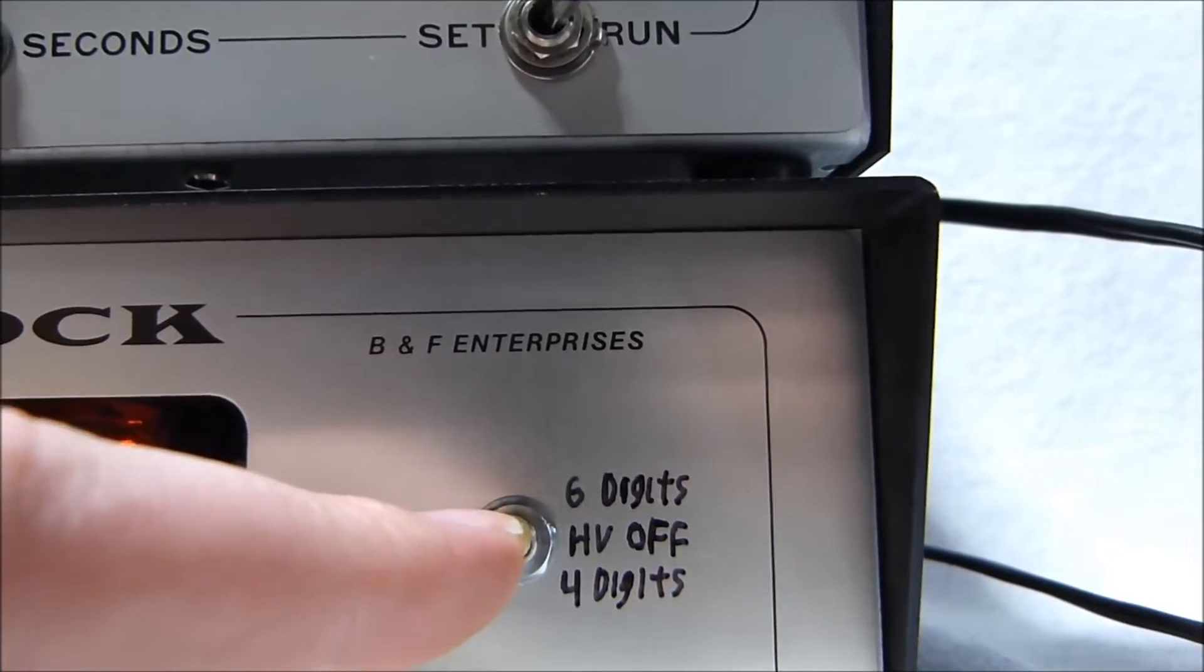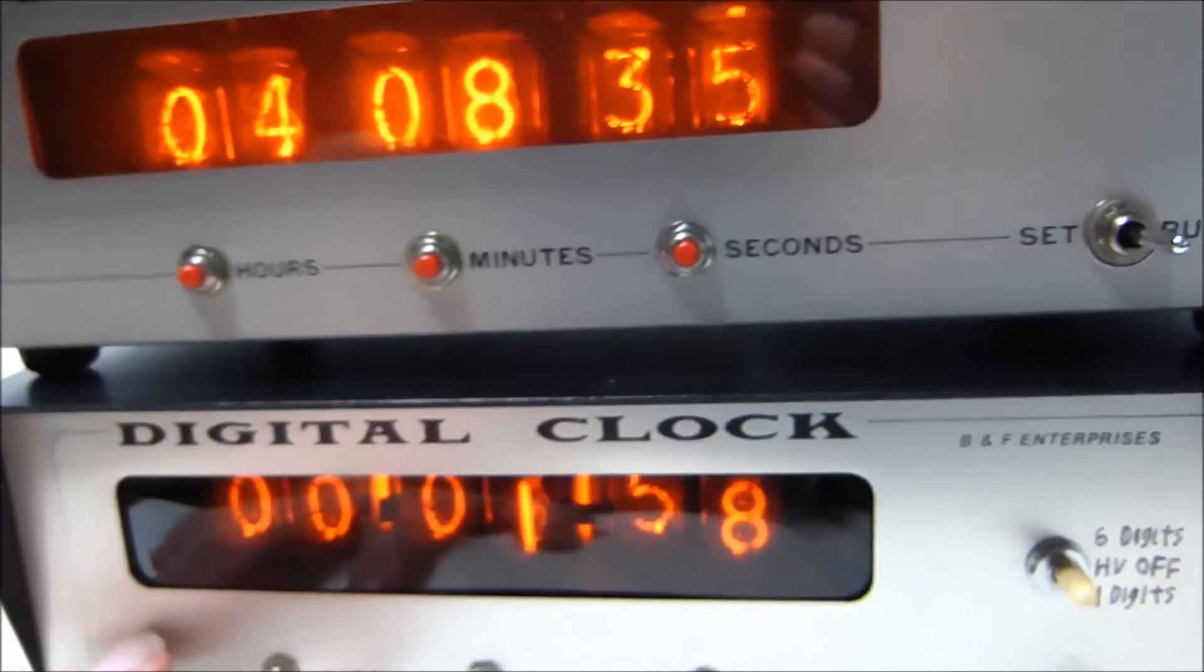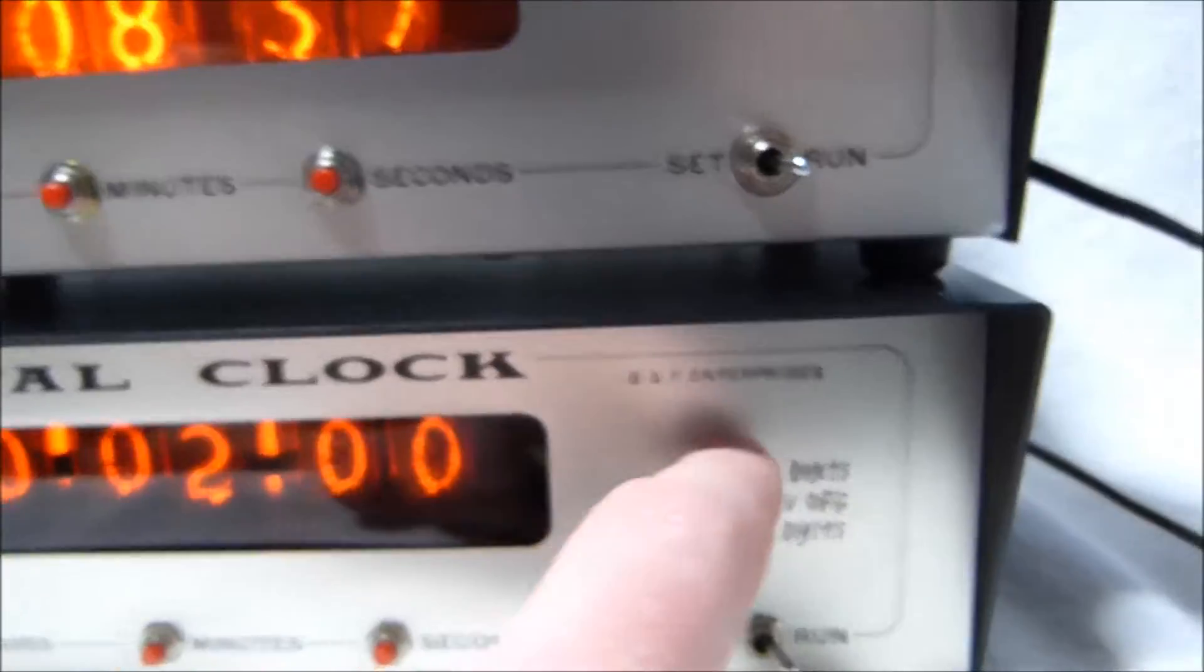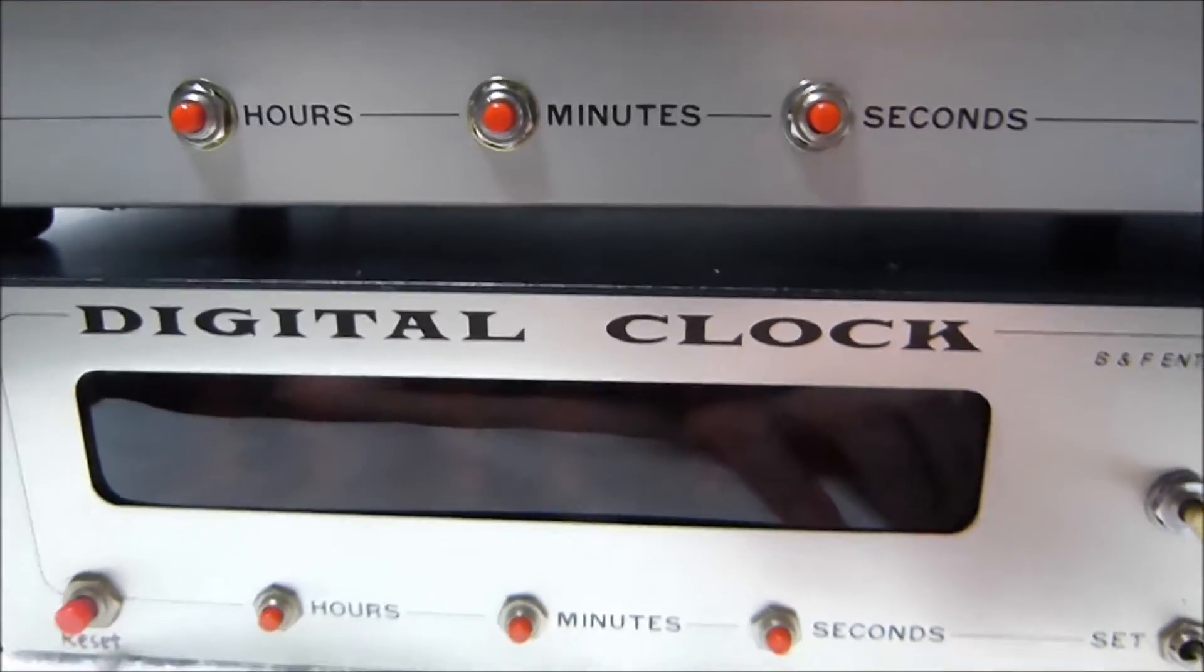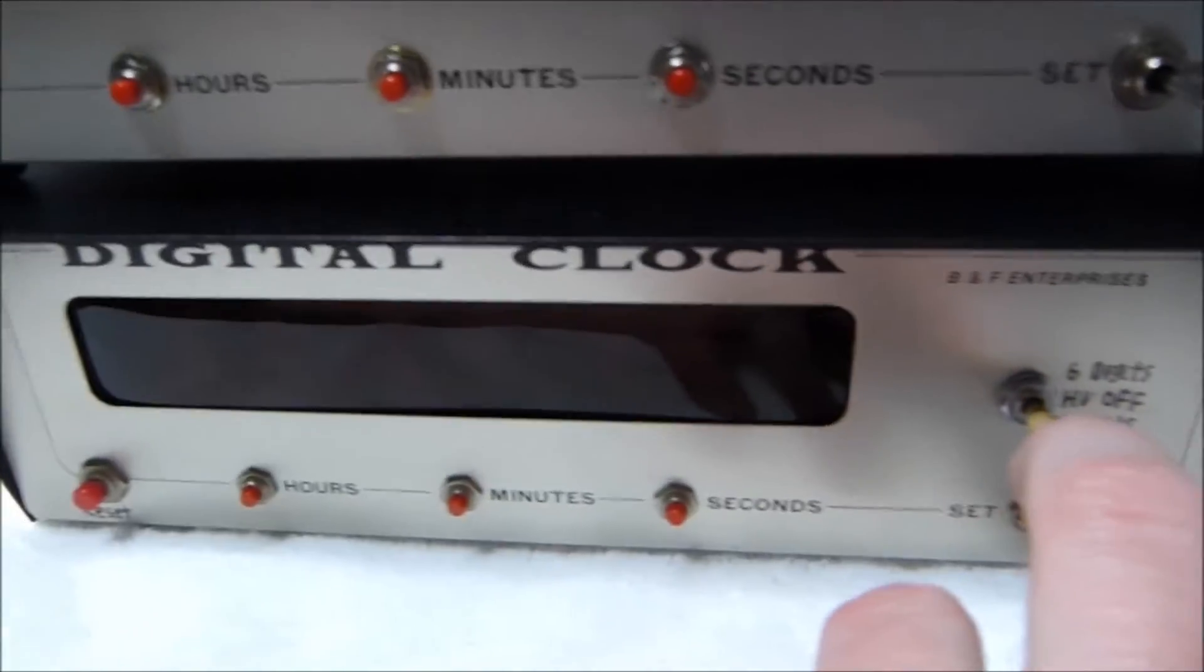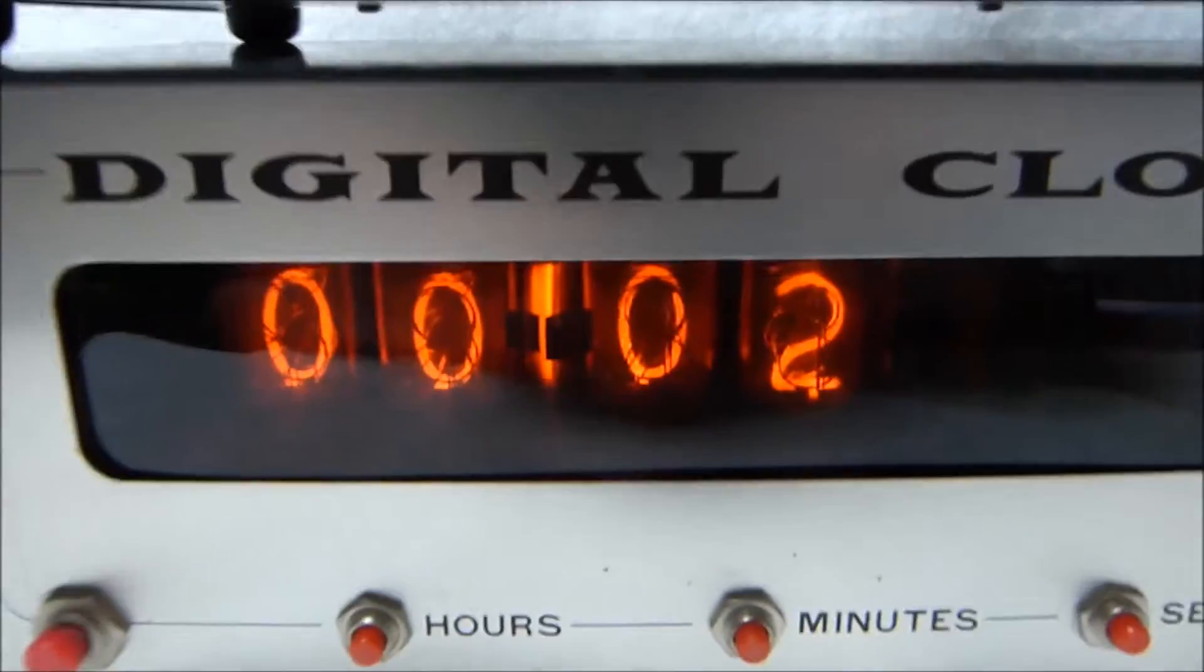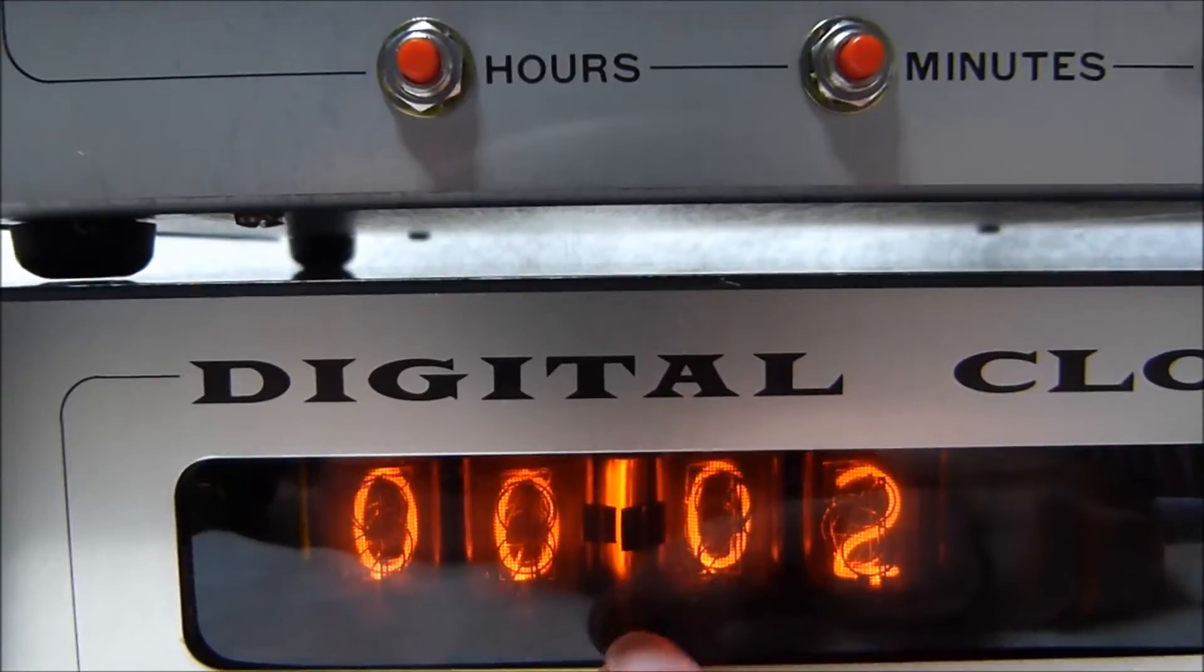Now this extra control here is kind of useful, at least the first two positions are. It's in six-digit mode right now. When you put it to the middle position, it cuts the high voltage to everything but keeps the timekeeping circuitry in operation. Then when you push it down to four-digit mode, it only lights up the first four digits and the colon tube between them.